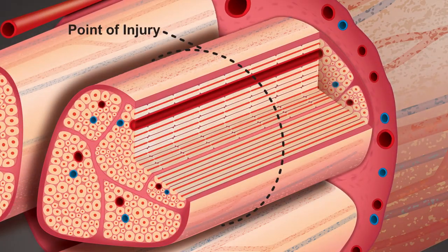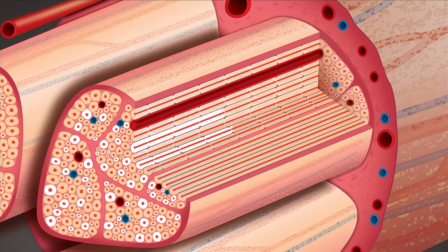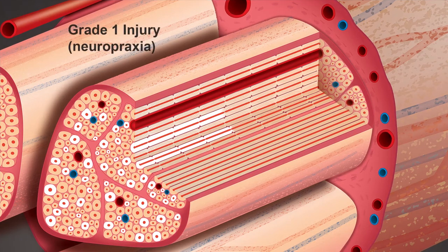A grade one injury is basically a local conduction block. Both motor function and proprioception are mainly affected, while some sensation and sympathetic function may be preserved. Primarily thick myelinated fibers are damaged, with possibility of myelin loss. Axonal continuity is preserved, and there is no Wallerian degeneration.